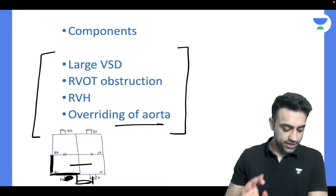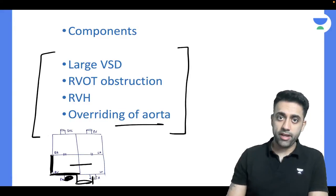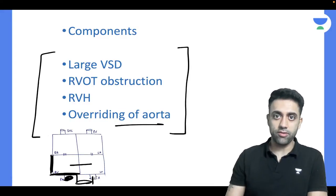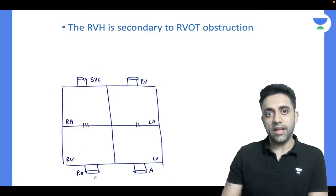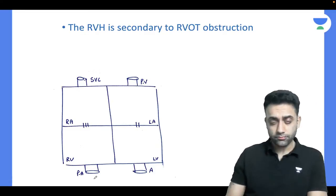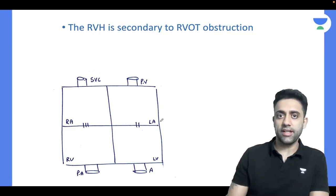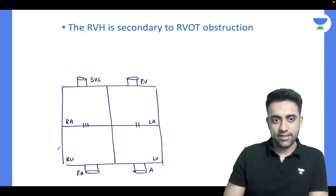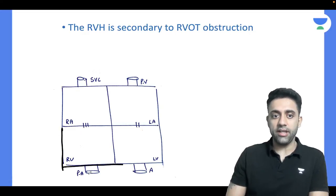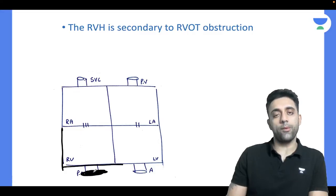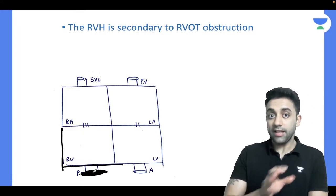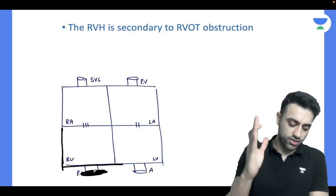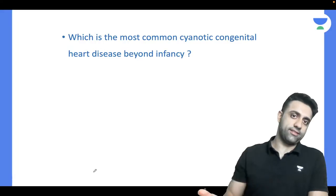The right ventricular hypertrophy is generally secondary to the right ventricular outflow tract obstruction. When there is RVOT obstruction, there is right ventricular hypertrophy. Also remember the aorta is little anteriorly placed — overriding of the aorta is there.